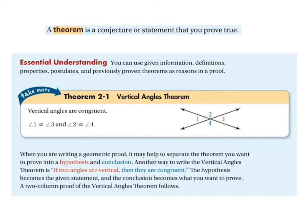Angle one is congruent to angle three, and angle two is congruent to angle four. When writing a geometric proof, it helps to write it as a conditional statement with a hypothesis and conclusion. You could write this as: if two angles are vertical, then they are congruent. The hypothesis is the given statement, and the conclusion is what you want to prove.